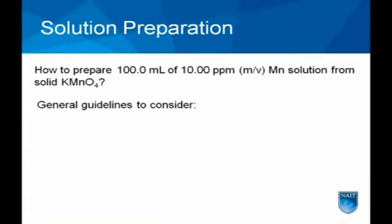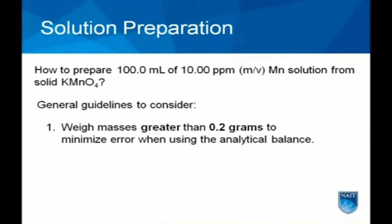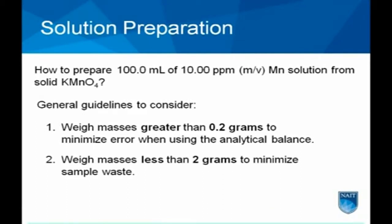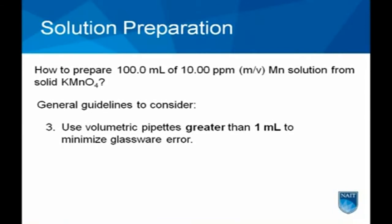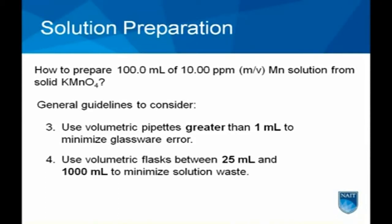Some guidelines to consider are: weigh mass greater than 0.2 grams to minimize error when using the analytical balance, weigh masses less than 2 grams to minimize sample waste, use volumetric pipettes greater than a milliliter to minimize glassware error, and use volumetric flasks between 25 milliliters and 1,000 milliliters to minimize solution waste.